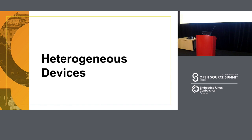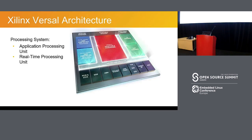Heterogeneous devices — I think there are more and more every day. We're seeing devices that have a myriad of different architectures inside them. The obvious Xilinx example here is the Versal architecture, in which Xilinx is an FPGA company. It has an FPGA fabric — the programmable logic part — and also a processing system part, or PS part, which is the part that runs Linux. It has a Cortex-A72 processor as the application processing unit that runs Linux, and it has a real-time processing unit, an R5, that can run an RTOS such as FreeRTOS.